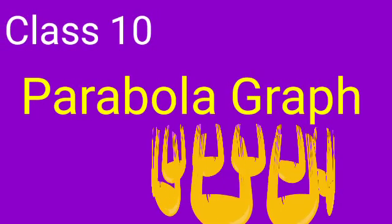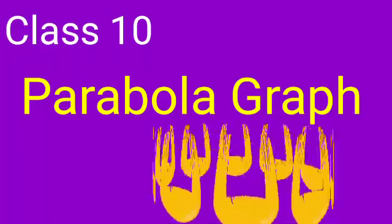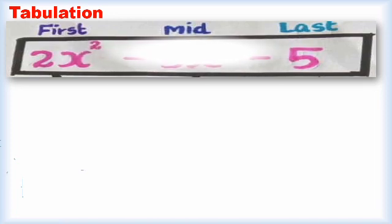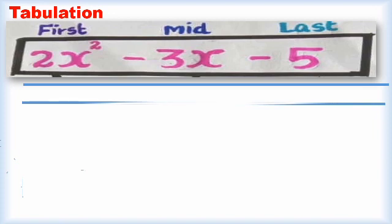Welcome to one and all. This is Class 10 — parabola graph tabulation the easy way. In the previous video I explained how to do the tabulation. Here we are going to see the actual tabulation for the given problem: 2x² minus 3x minus 5.